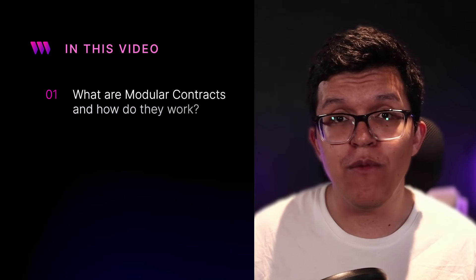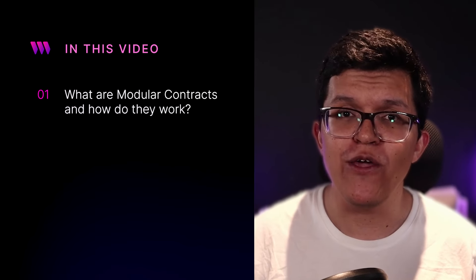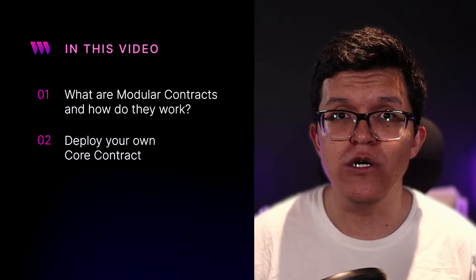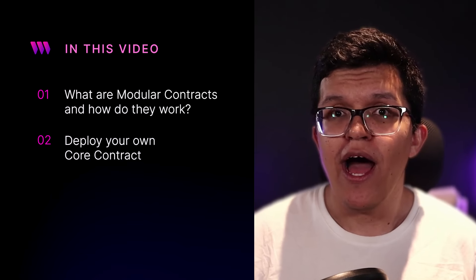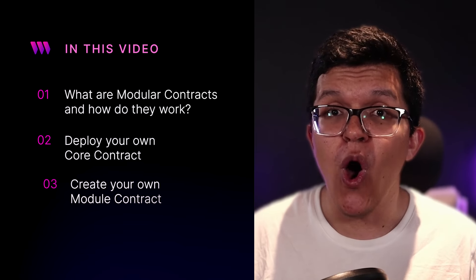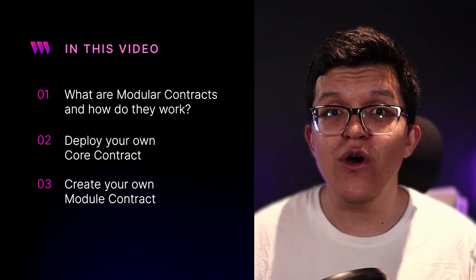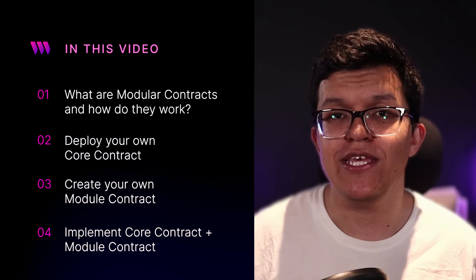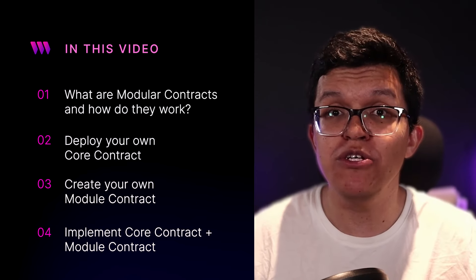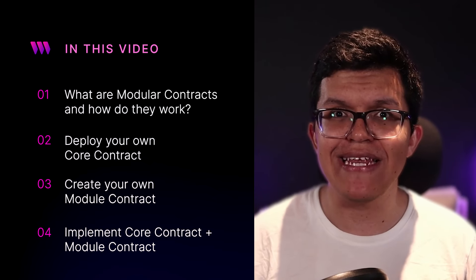In today's video, I'm going to explain what modular contracts are and how they work. Then I'm going to show you how you can deploy your own core contract using the TierWeb Dashboard. Next, I'm going to show you how to create your own module contract from scratch. And finally, we are going to implement that module contract with custom functionalities on top of the core contract we just deployed. So I hope you are ready because we are just getting started.